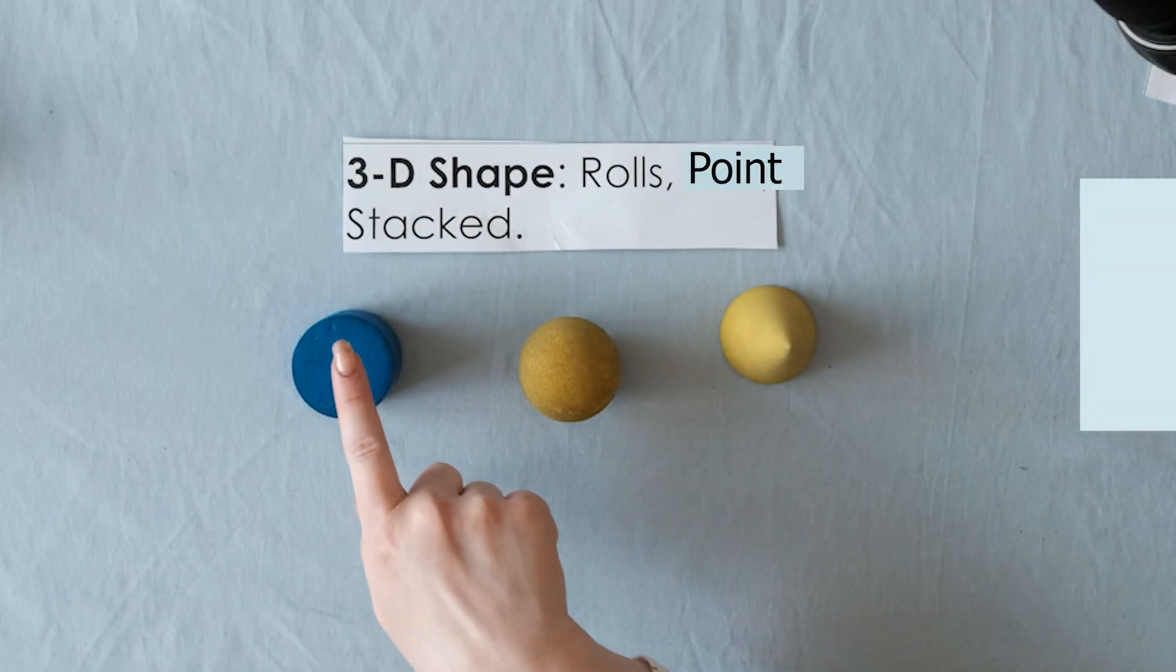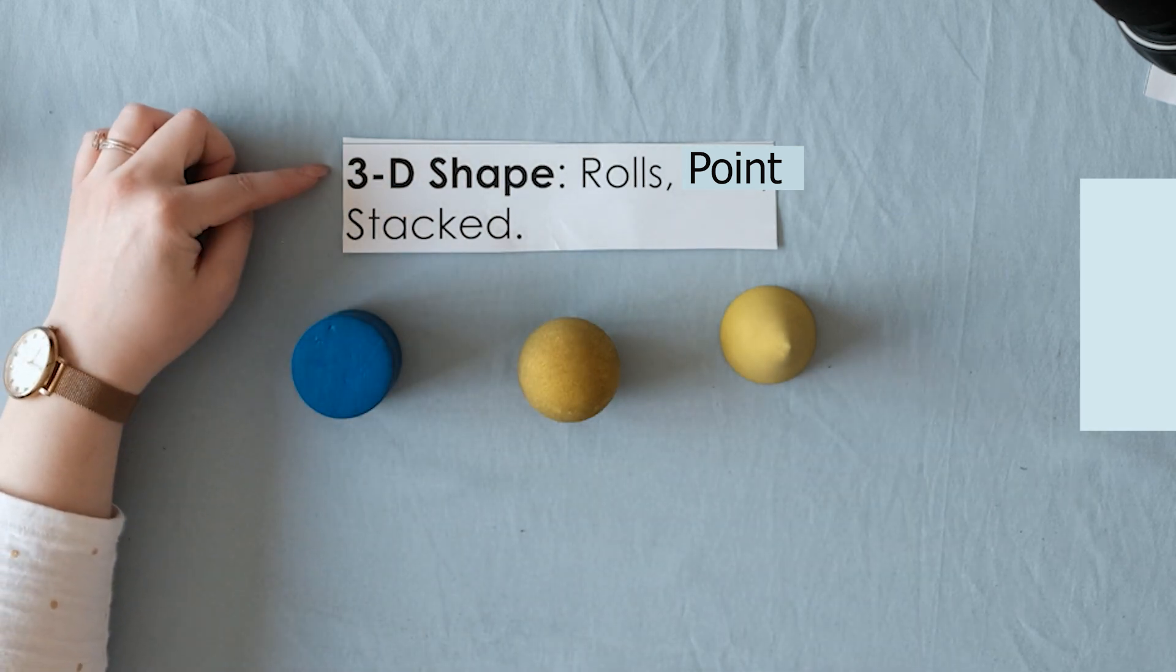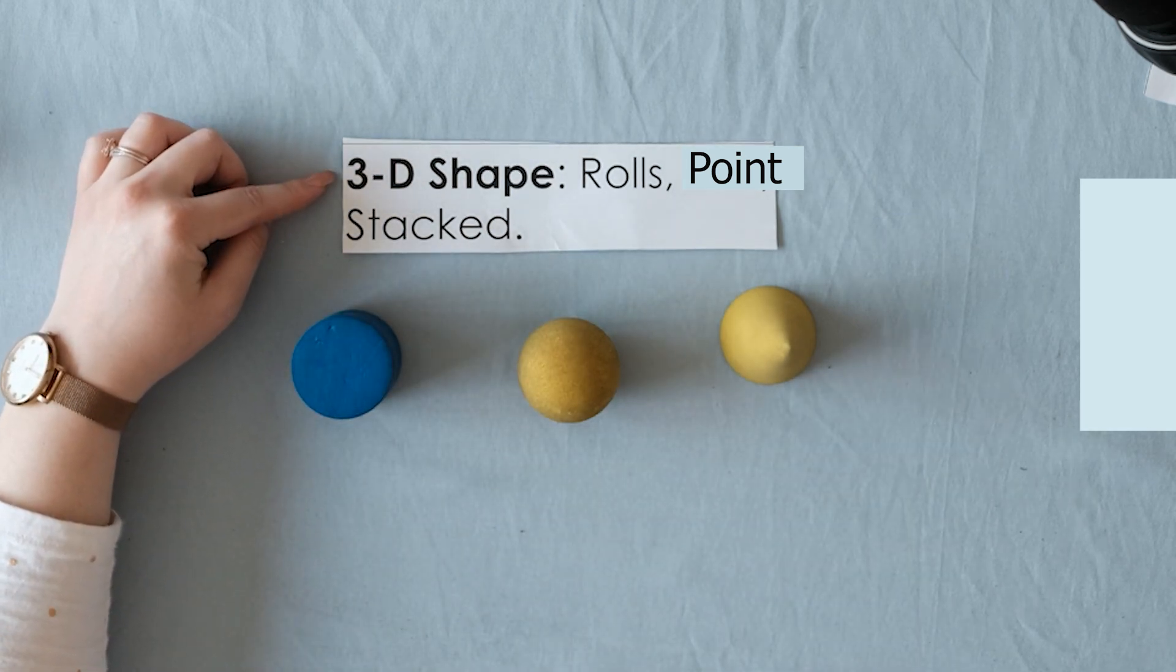In this video, we will be learning about three of the 3D shapes. Before we get started, let's review what a 3D shape is. A 3D shape rolls, has a point, and can be stacked.